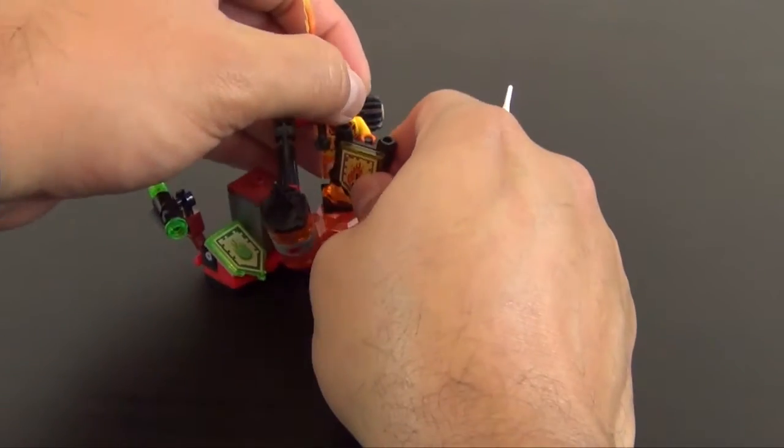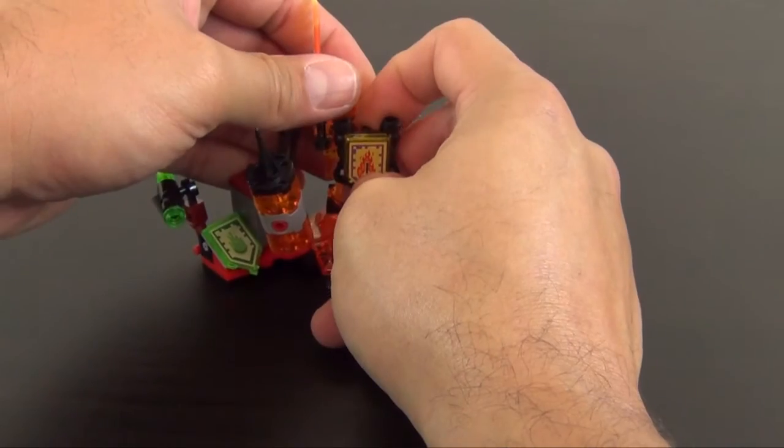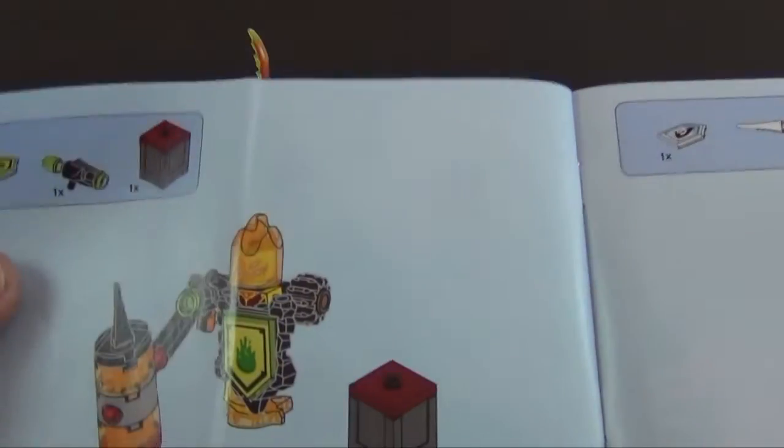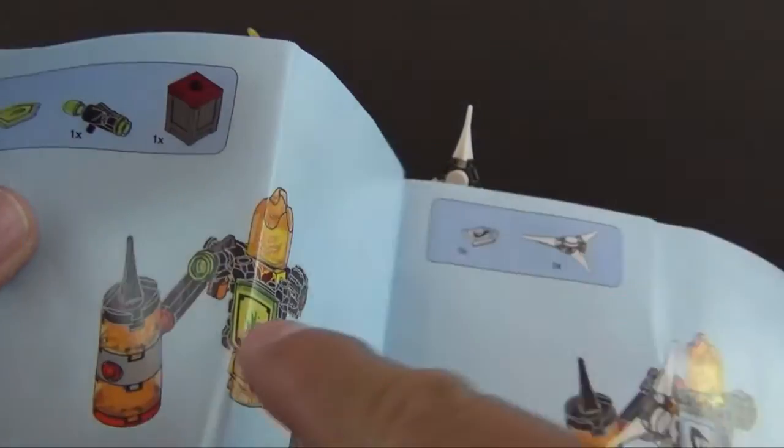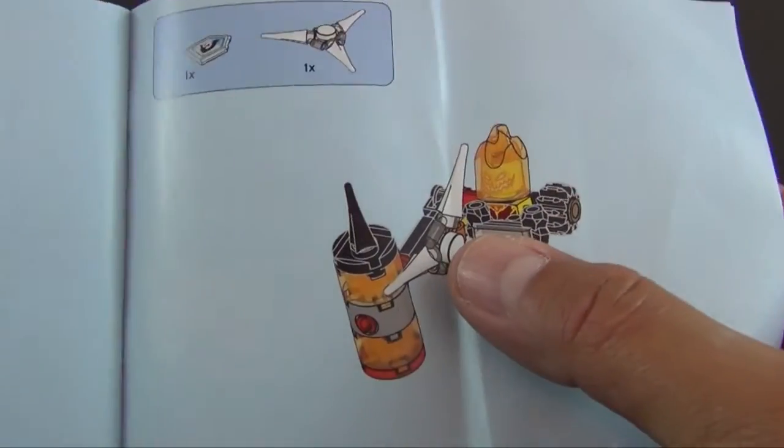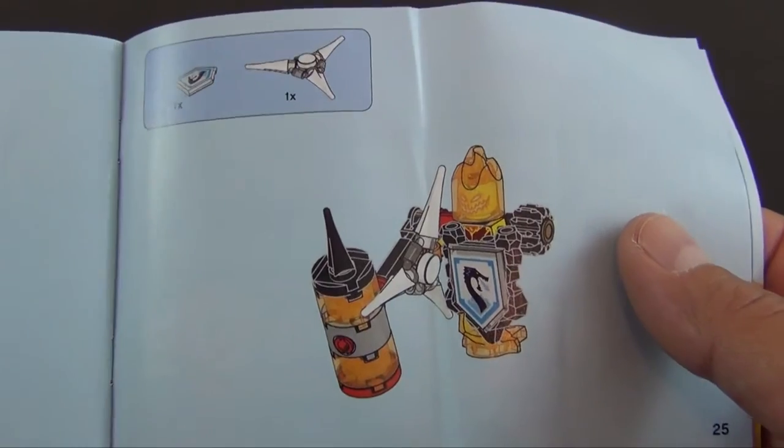Put Flama right there. Here we go. So that completes the build. And like I said, the extra pieces you can switch out the blade for the stud launcher, or for the little ninja throwing star looking piece.